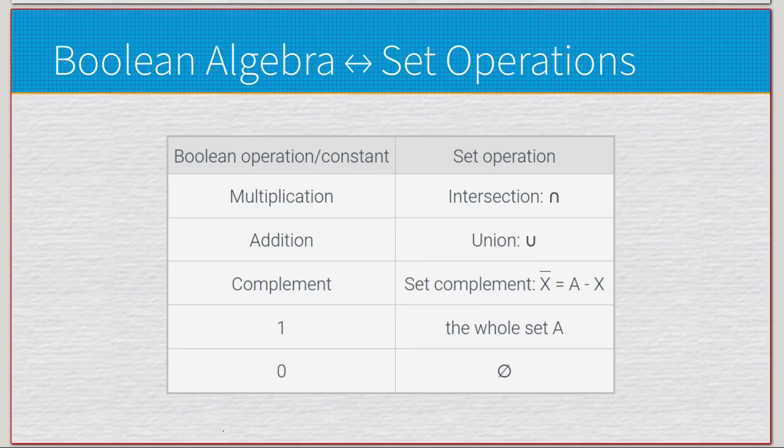Just to wrap this up, I'll show the equivalency from Boolean Algebra operations to set operations. Multiplication is the exact same thing as intersection. Addition is the same thing as union. Complement is set complement. One is going to be the whole set A. Then zero is the empty set.